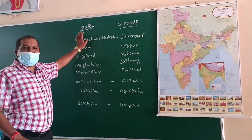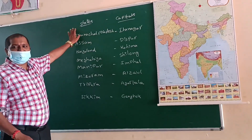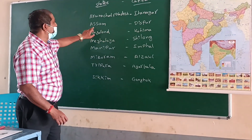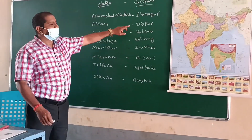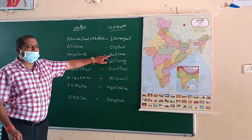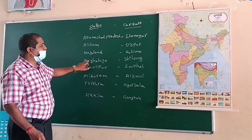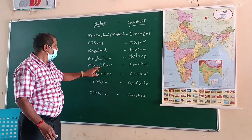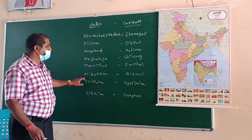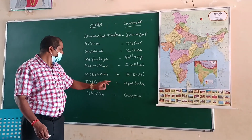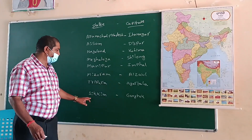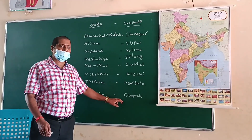Now the states and capitals: Arunachal Pradesh — Itanagar. Assam — Dispur. Nagaland — Kohima. Meghalaya — Shillong. Manipur — Imphal. Mizoram — Aizawl. Tripura — Agartala. Sikkim — Gangtok.